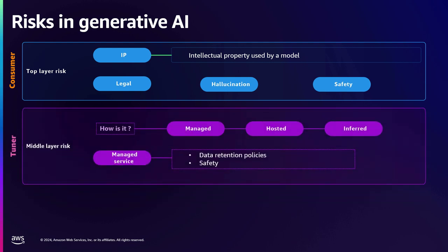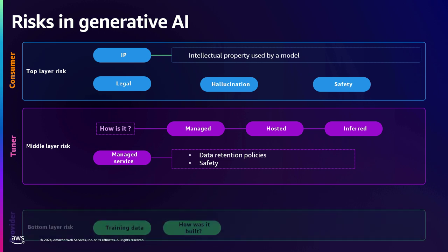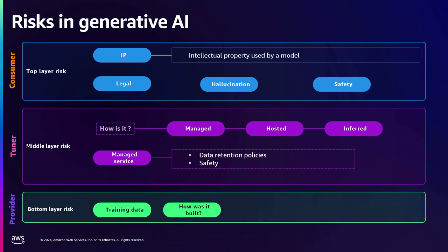The middle-layer risks are your hosting layer — how your models are being hosted and inferred from. Are there appropriate data retention policies in place? How are you storing your conversation histories if it's a chatbot? Who has access to it? Who can modify your prompt templates? And the bottom-layer risks are with your foundation model itself — how your model was trained, whether the data was ethically sourced, or whether it has toxic or biased content from the time of training.